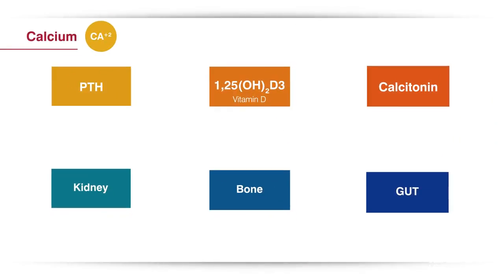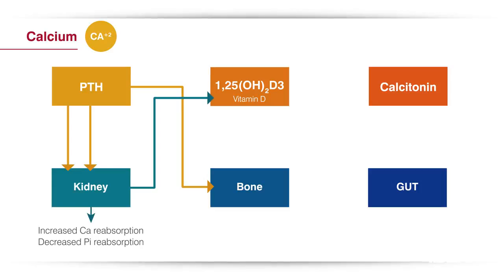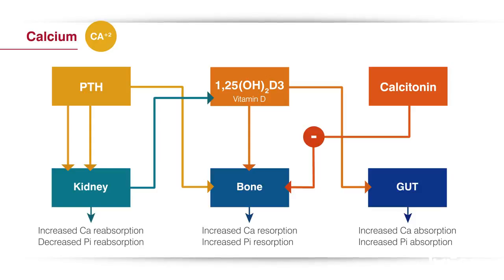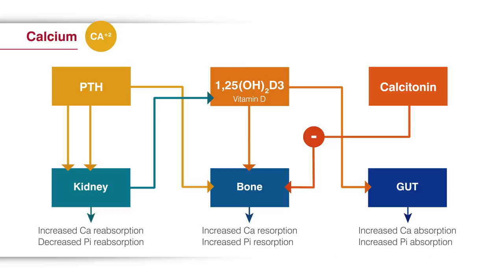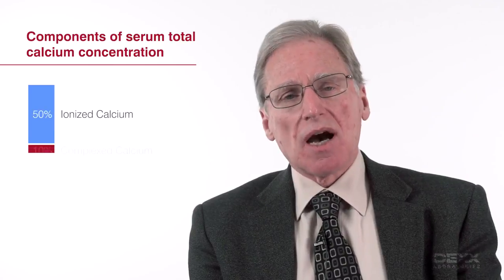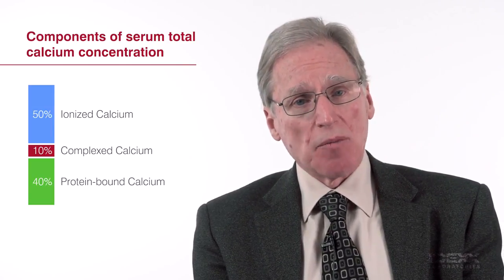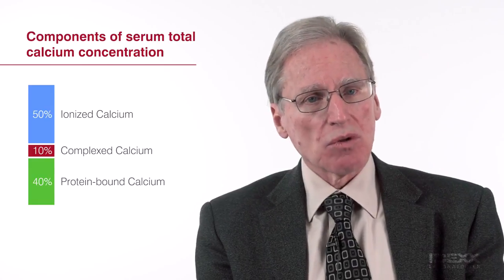The other electrolyte we would like to look at is calcium. Calcium is pretty complicated because the serum calcium concentration is regulated by three hormones — parathyroid hormone, calcitriol (which is active vitamin D), and calcitonin — acting together on three different organ systems: the kidney, the bone, and the gastrointestinal tract. Another factor that makes understanding calcium difficult is that when you measure calcium on your biochemical profile, you're getting the total serum calcium concentration, but hidden within that total are three components: the ionized concentration, the complex concentration, and the protein-bound concentration. This is important because 40% of that calcium is bound to plasma protein albumin, so changes in blood albumin concentration can affect your total calcium concentration.